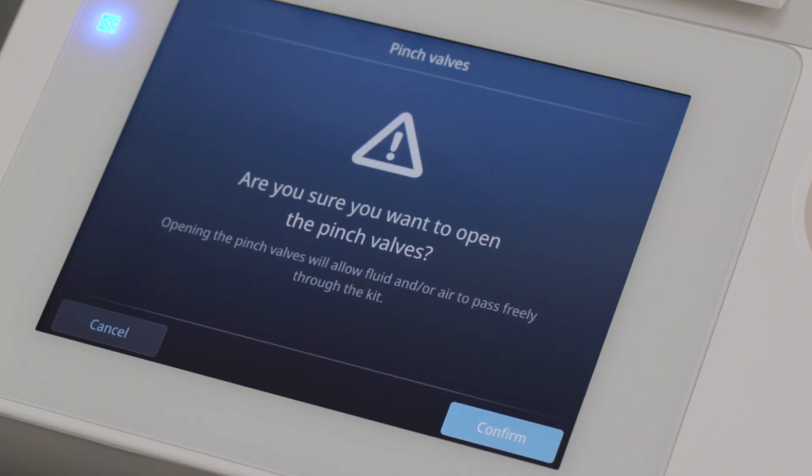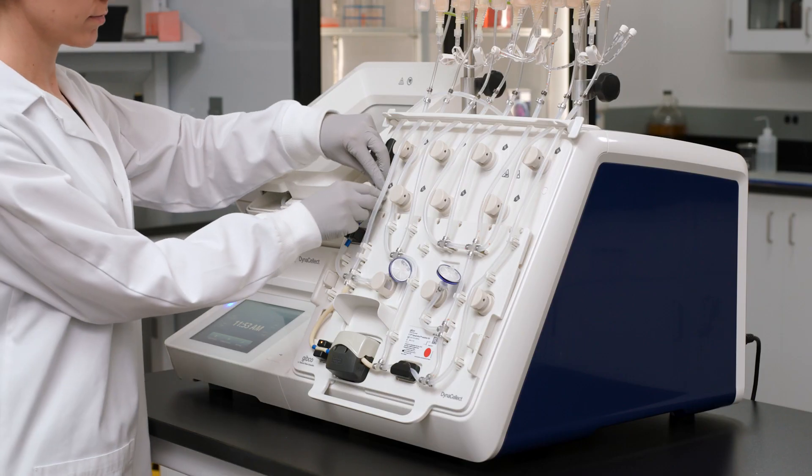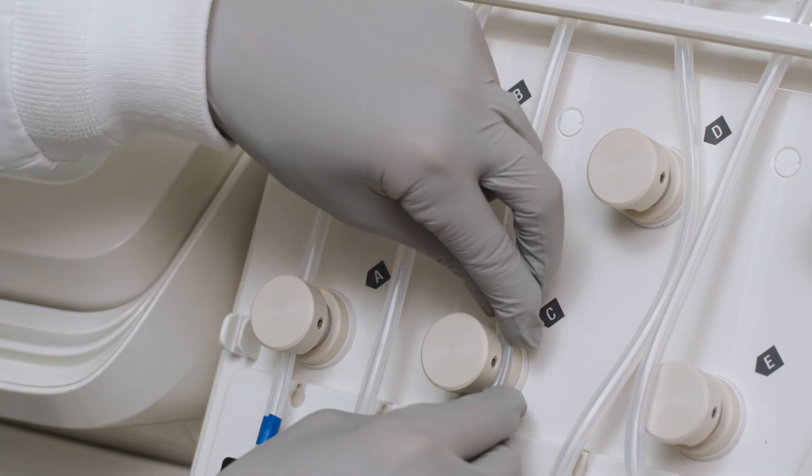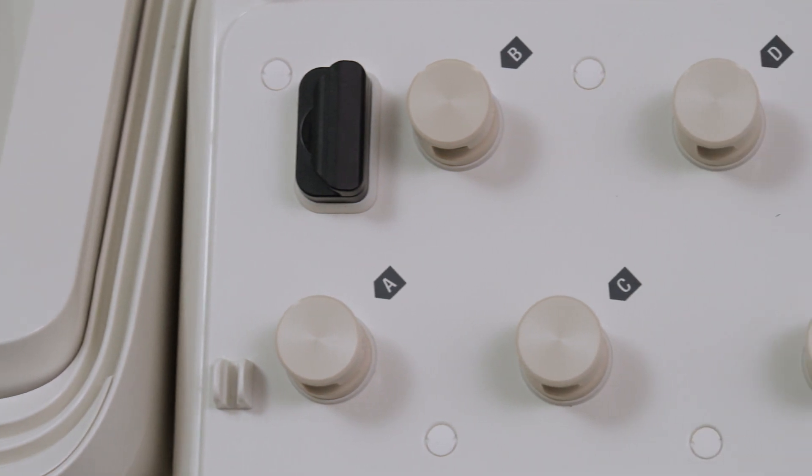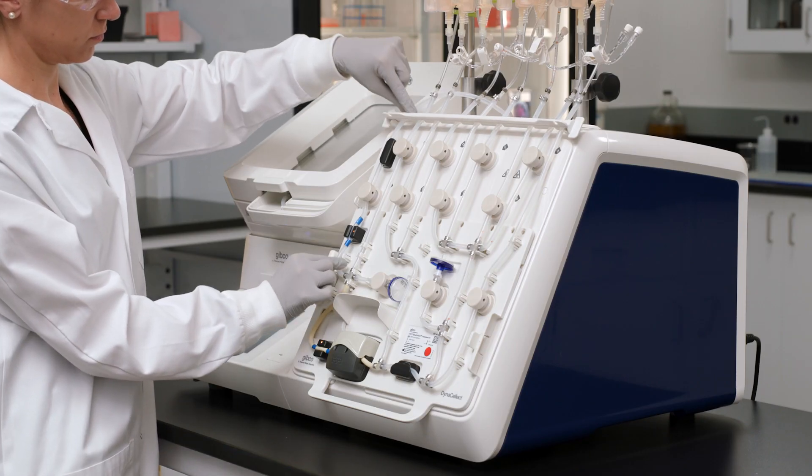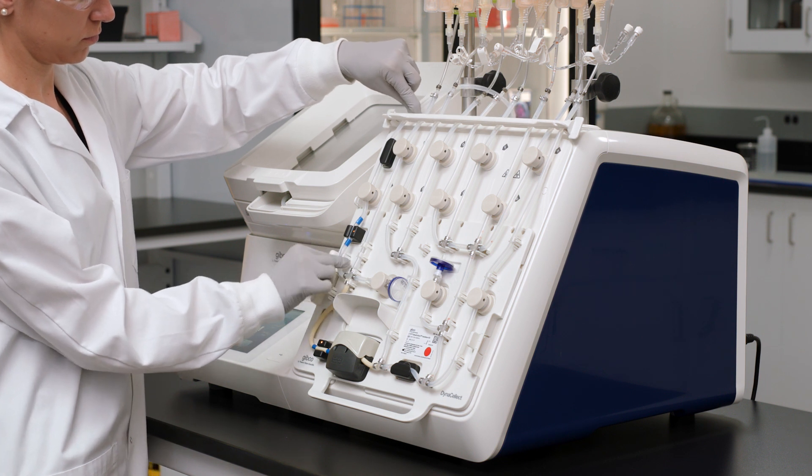From the touch screen, open the pinch valves, then install the tubes into all the pinch valves. The pinch valves, cassette, and tube holders have letters to ensure the correct placement of tubing. When all the tubes are installed, straighten the tubes and close the pinch valves.